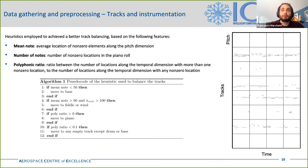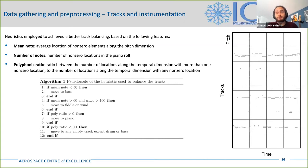The heuristics are summarized as follows: if the min note of an old track is lower than 50, it is moved to bass; if it is greater than 60 and the number of notes is greater than 100, it is moved to fiddle or wind; if the polyphonic ratio is greater than zero, it is moved to piano; and if it is lower than 0.1, it is moved to any empty track except drum or bass. This last heuristic is used when not enough suitable tracks are found using the other rules. More information is available in the paper.